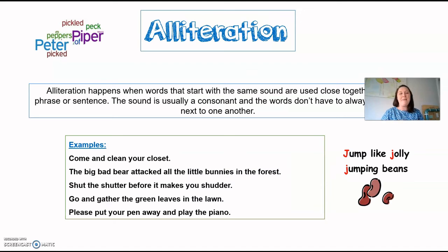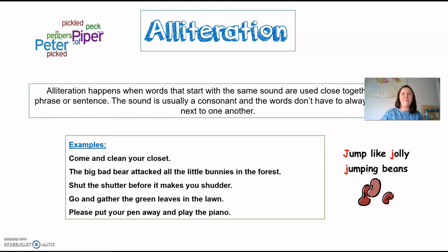Alliteration happens when words that start with the same sound are used close together in a phrase or sentence — repeating the same letter or sound. For example: 'jolly jumping beans' repeats the J sound; 'come and clean your closet' repeats the C sound. Alliteration is fairly easy to pick up on.